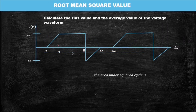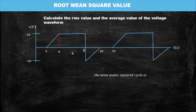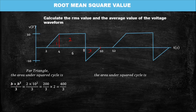We are supposed to find the RMS value and the average value of this waveform. Let's deal with the RMS value first. Looking at the waveform, it goes here and comes here — you can see the waveform goes up to here and then starts again, so we are just taking one waveform. This waveform forms a triangle shape, and we have regions one, two, and three. We find the squared area for the triangle using base times height squared over three.